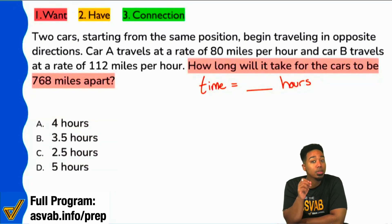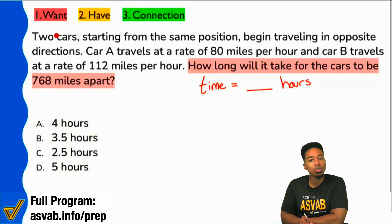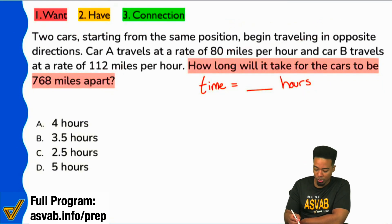Now step two, let's read through the information. The first sentence here says two cars, starting from the same position, begin traveling in opposite directions. So for those of you who are here for the first time, that's actually a very important piece of information.